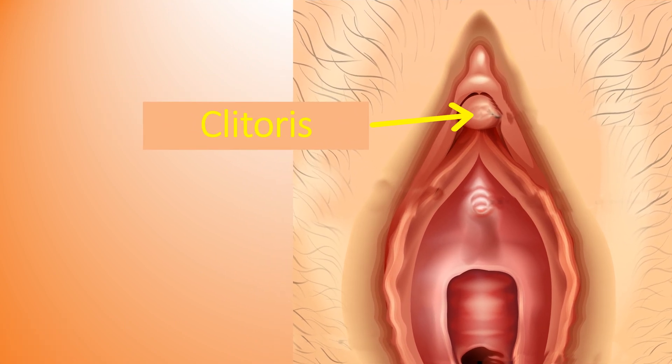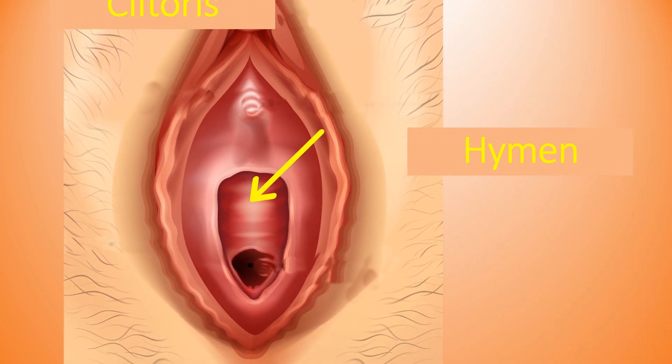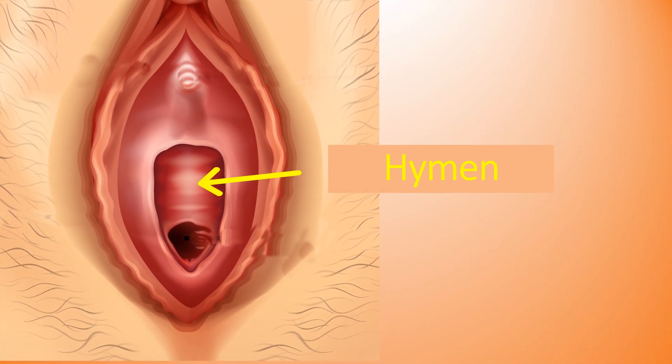The clitoris is very sensitive to stimulation and found at the anterior margin of the vaginal orifice. It helps with secretion of mucus into the vagina for lubrication. The hymen is a thin piece of mucosal tissue that surrounds or covers the external vaginal opening.